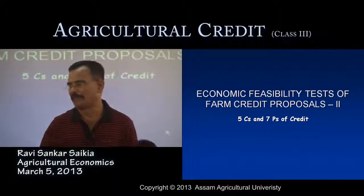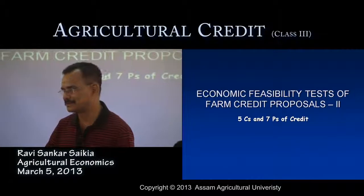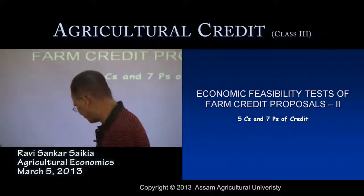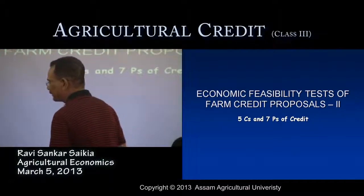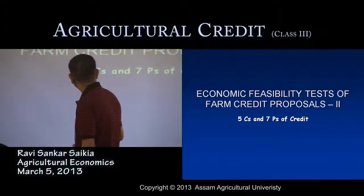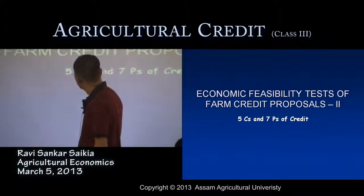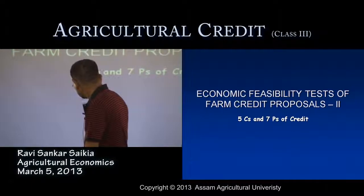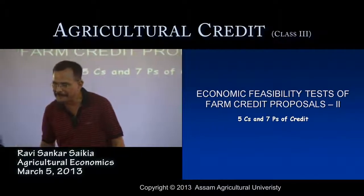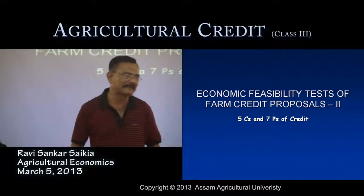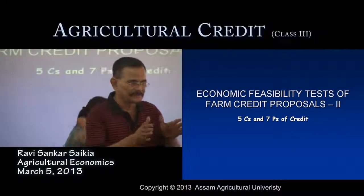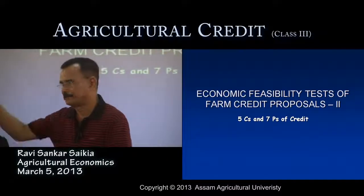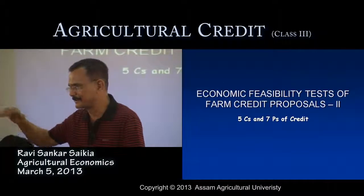When we get a positive answer for all three criteria — return, repayment, and risk — the loan advanced by the banking institution to the farmer is considered a safe proposition. That is the summary regarding the three R's of credit. Today, regarding the economic feasibility test of a farm credit proposal, we consider the five C's and seven P's of credit.